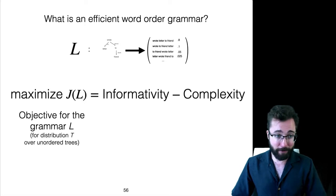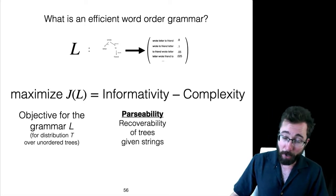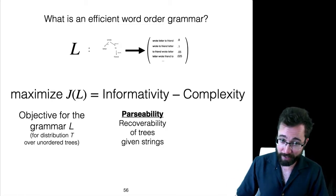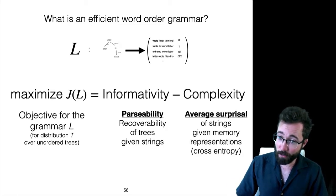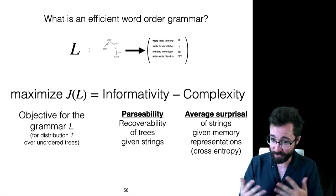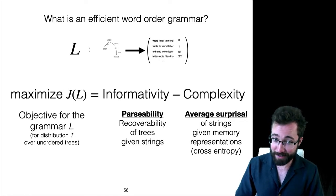The objective function J for a word order grammar L is going to be parsability, which is how well you can recover the unordered tree from the string, minus complexity quantified as average surprisal given memory representation. This is going to be using surprisal theory to measure processing complexity.